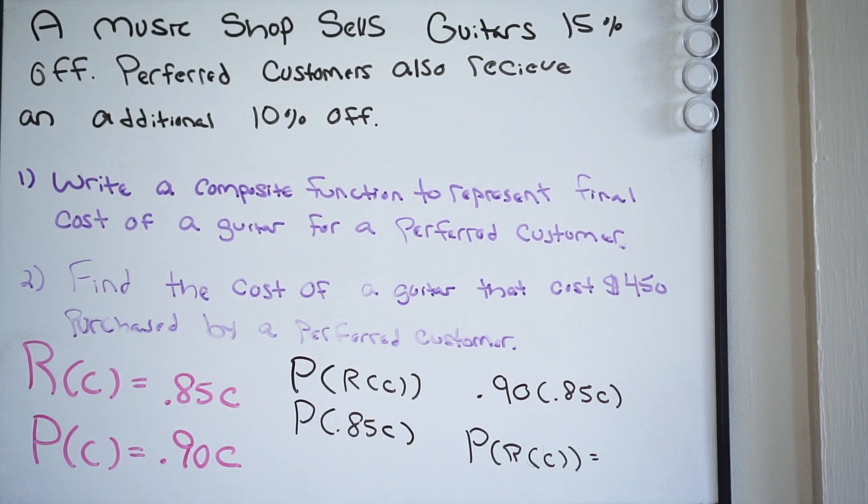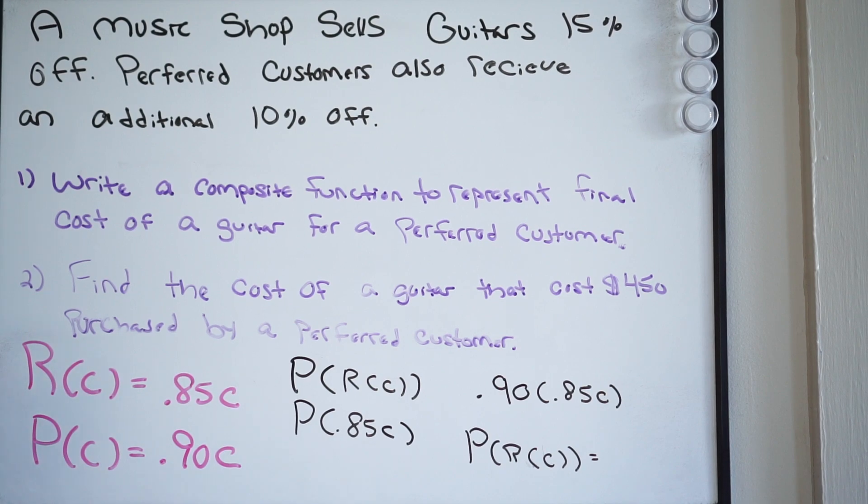0.90 times 0.85 and we get 0.765C. 0.765C.